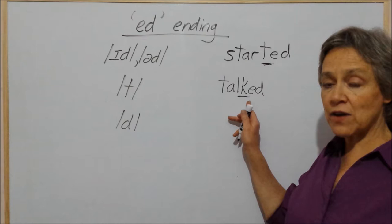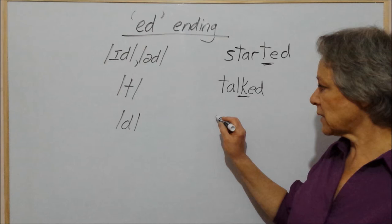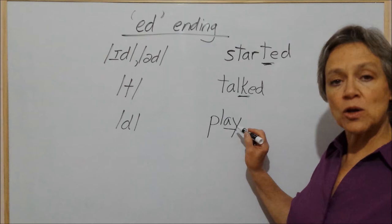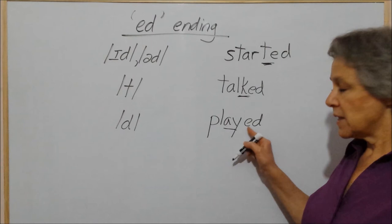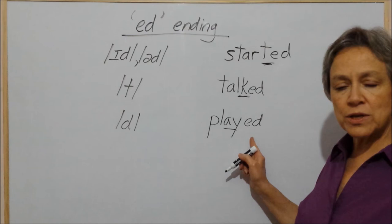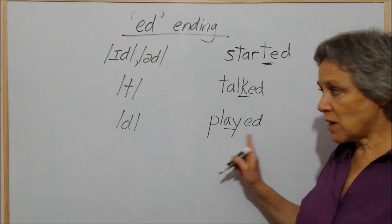If I have a word that has a different ending sound — I'll write the word 'play' here, which ends in a vowel sound. Play. The last sound here is a vowel, /eɪ/. When I add ed to this word, the ed ending will sound like /d/. This word is 'played', and it sounds like /d/, because the word 'play' ended in a vowel sound.